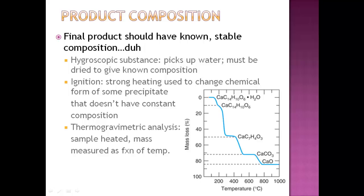So many precipitates actually are hygroscopic and have a variable quantity of water and thus must be dried under conditions that give a known stoichiometry of water. And hopefully you get zero, zero amounts of water, you get it as dry as possible. Sometimes ignition, or just basically strong heating, is used to change the chemical form of some precipitates that don't have constant composition after drying at moderate temperatures.